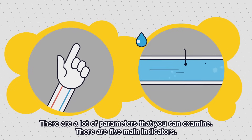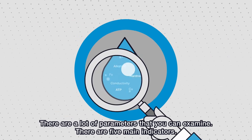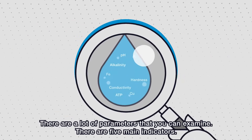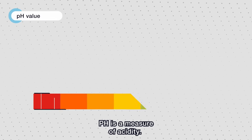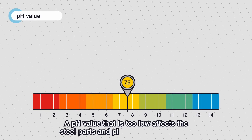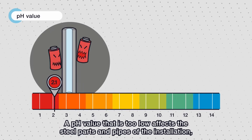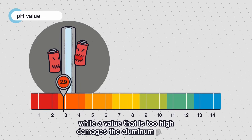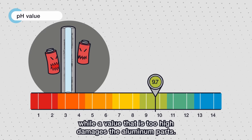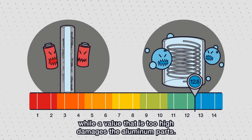There are a lot of parameters that you can examine, but there are five main indicators. pH is a measure of acidity. A pH value that is too low affects the steel parts and pipes of the installation, while a value that is too high damages the aluminium parts.